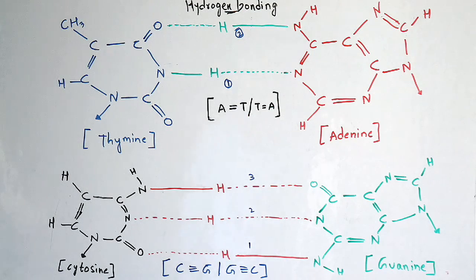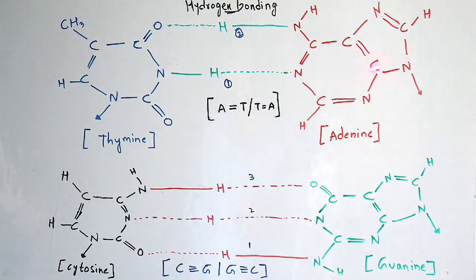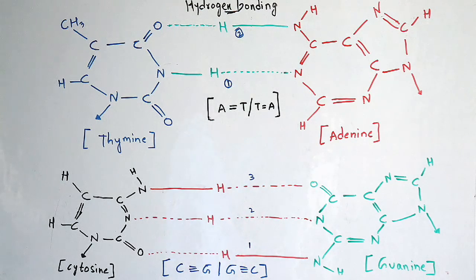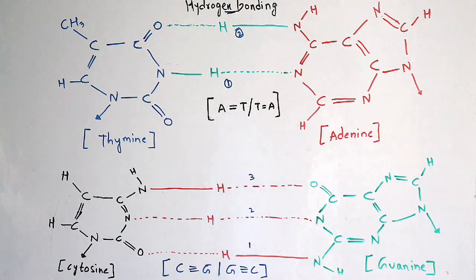By this you can understand that bonding does not take place between adenine and cytosine, thymine and guanine, cytosine and thymine, or adenine and guanine — all because of this hydrogen bonding. Due to this hydrogen bonding, the DNA structure is stable and maintains its helix shape.